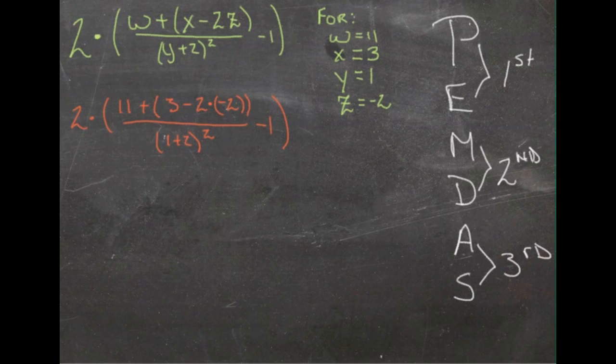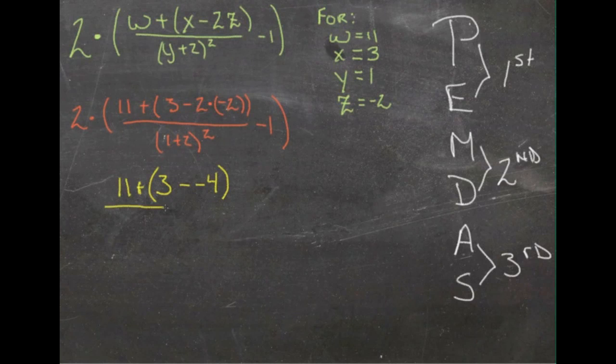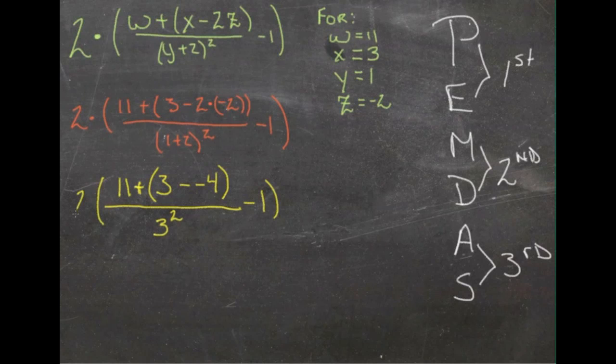Now we're going to do our innermost math operations with the parentheses. So we have 2 times negative 2, that gives us negative 4, and 3 minus negative 4 will remain in parentheses up here. We have 11 plus that quantity. On the bottom now we have 1 plus 2 inside the parentheses, that's 3. 3 squared, still have a negative 1 out here. And that whole thing is still being multiplied by 2.